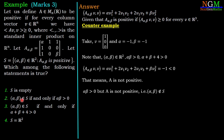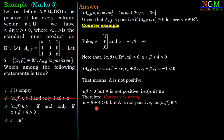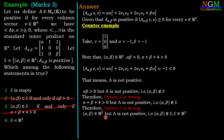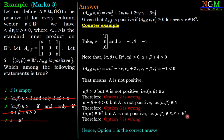Option 2 states that (α,β) ∈ S if and only if αβ > 0 — our counterexample violates this, so option 2 is wrong. The same example shows α + β + 4 > 0 but A is not positive, so option 3 is also wrong. And since (-1,-1) ∈ R² but A is not positive, S ≠ R², so option 4 is wrong. Therefore option 1 — S is empty — is the correct answer.